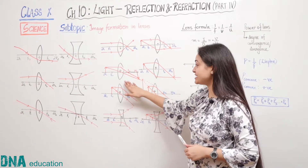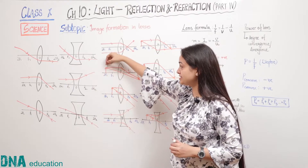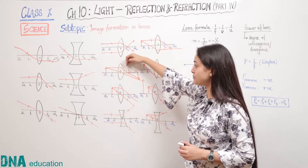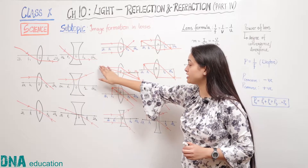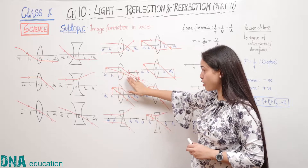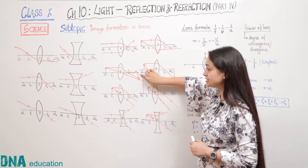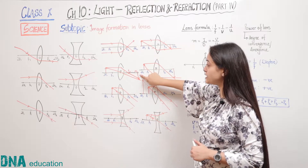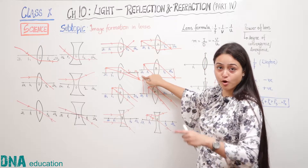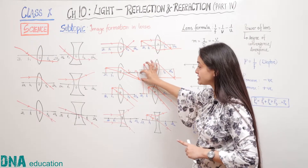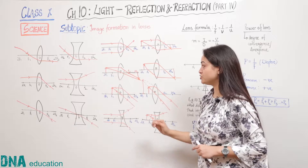The next case is when the object is placed at 2F1. In this case, the light coming parallel will refract from focus and the ray passing through the optical center will go undeviated. As you can see, the light rays will meet at 2F2. The image formed is real, inverted and of the same size as the object.